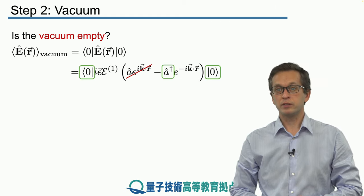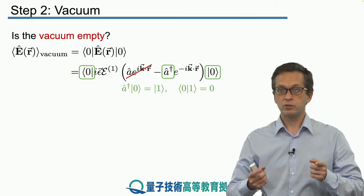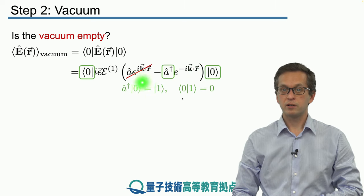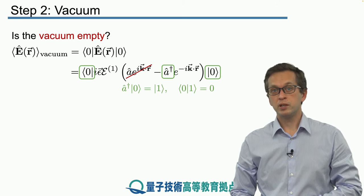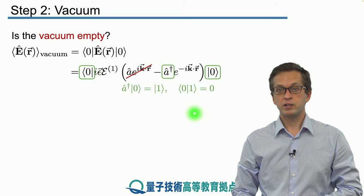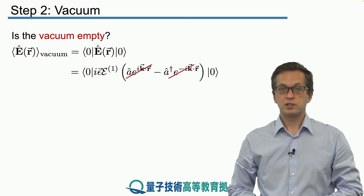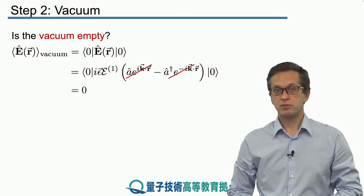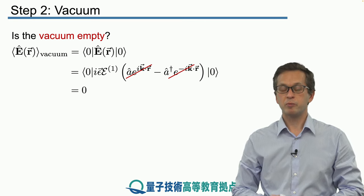How about the second term, A dagger applied to vacuum? Well, this one doesn't annihilate it - it in fact increases the energy of the field by one, creating one photon and moving us to number state one. But we have said that the number states form an orthonormal basis, meaning when we compute the inner product between this zero and then this one after application of a dagger, we get zero - they are orthogonal. In other words, the average of the electric field is zero.